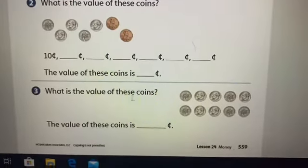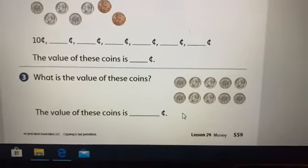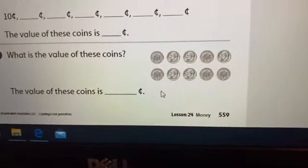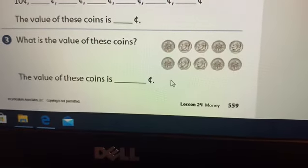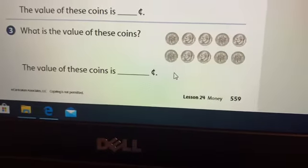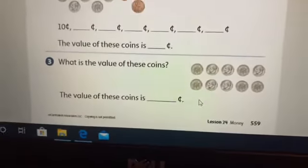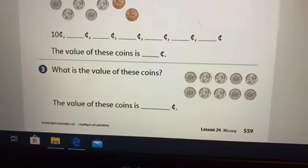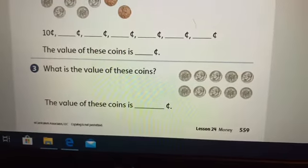Oh, this one's a little tricky. How much money is here? So those are all dimes. How much money is there? Okay. I hope you said 100 cents. That's also what? 100 cents is also one, right? One dollar.